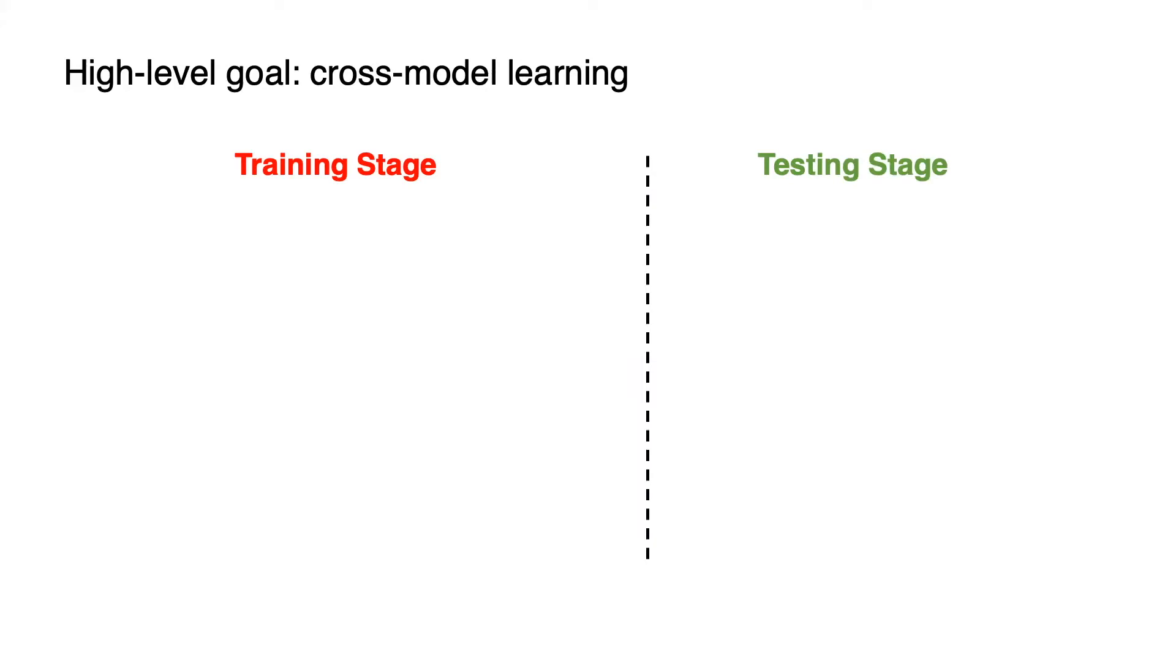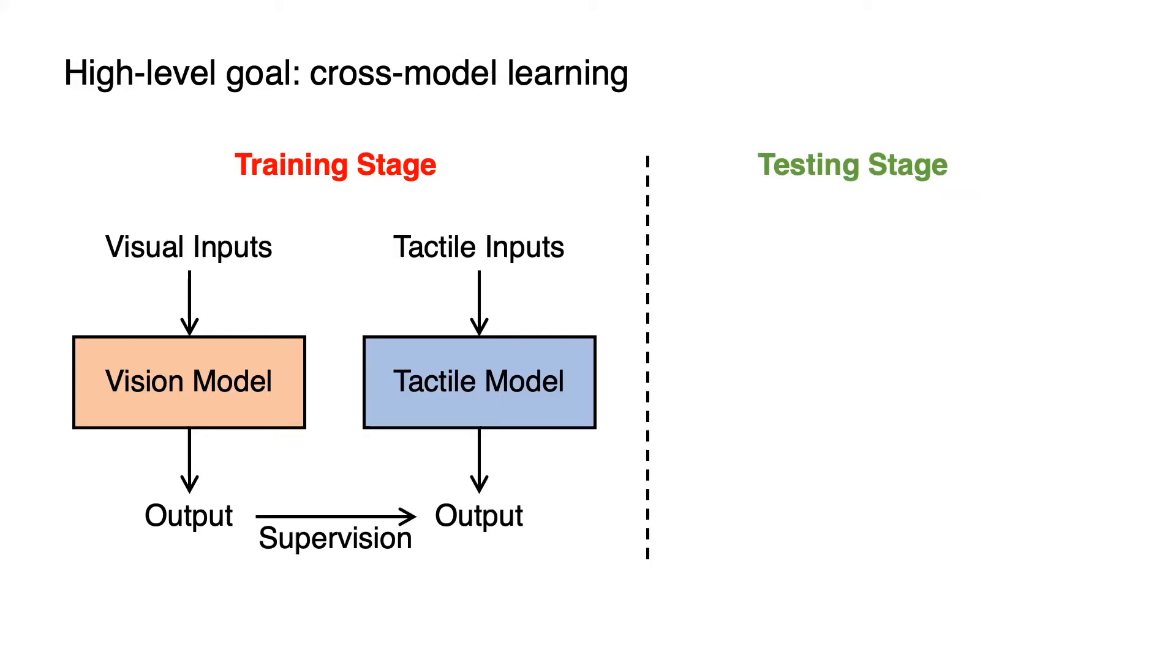For this purpose, we seek to use a cross-modal learning framework that during training, we assume to have access to both vision and tactile information. Then, we leverage the advances in computer vision and process the visual inputs using a vision model to generate labels. The generated labels are then used to supervise the tactile models. During test time, we only assume to have access to the tactile inputs and predict the corresponding outputs using the trained tactile model.